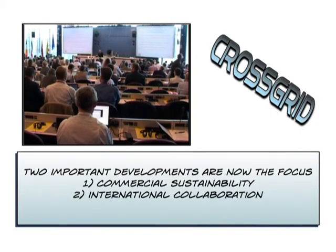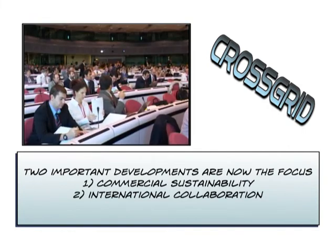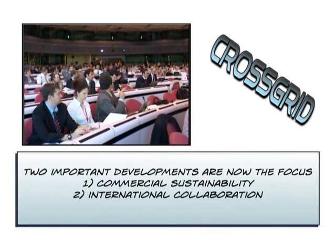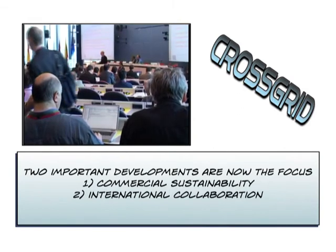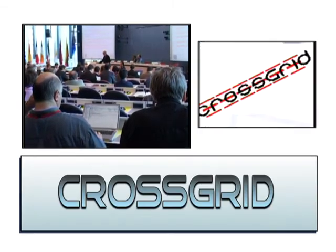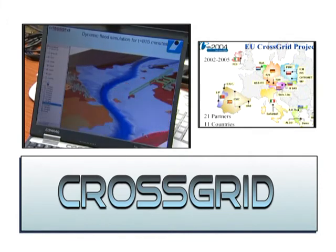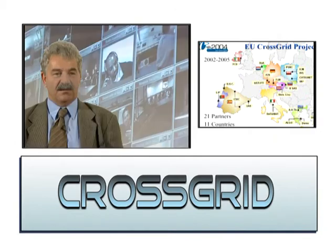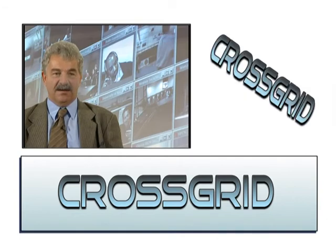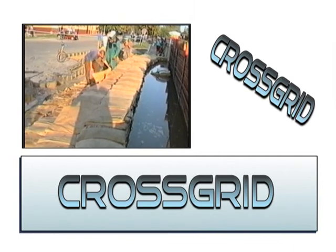CrossGrid believes that there are two important areas of their work that also need to be developed. The first is to ensure that the huge investment made by the European Commission and others creates products and services that are commercially sustainable. I am convinced that these products could be commercialised. Many river authorities exist, and each of these river authorities will need such software. Cities also will need such software. So I think that many, many customers exist.